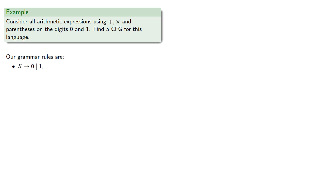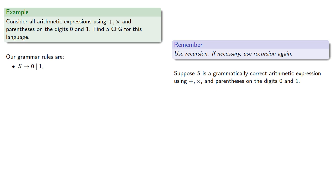A useful idea to keep in mind when creating a context-free grammar is to use recursion, and if necessary, use recursion again. Suppose S is a grammatically correct expression using plus, times, and parentheses on the digits 0 and 1. We can throw it inside a set of parentheses, giving us the rule S produces parentheses S.